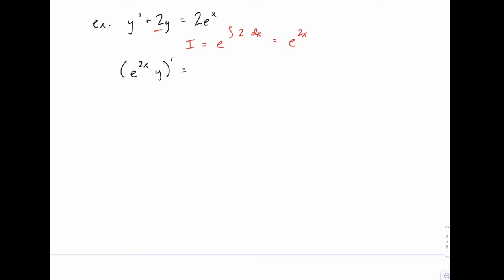Then the right-hand side will be 2e to the x times e to the 2x, so that's 2e to the 3x. Remember with exponents, when you multiply two things with the same base, you add the exponents.